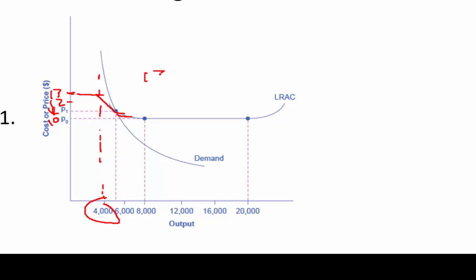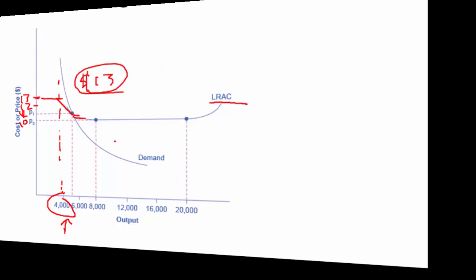So we estimate from the graph that the new firm's average cost of producing would be about $13, found by extending the long-run average cost curve and seeing where the output level of 4,000 units intersects it.